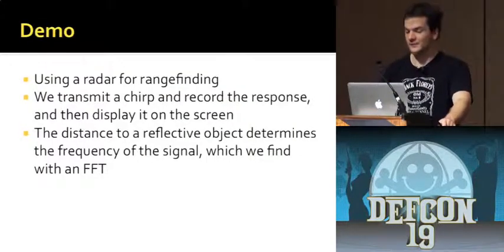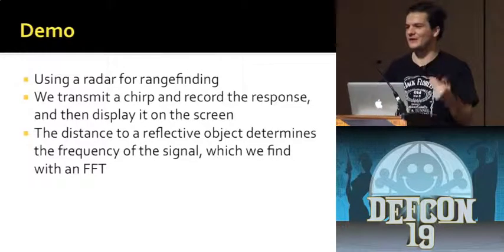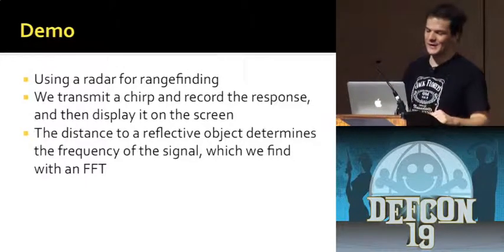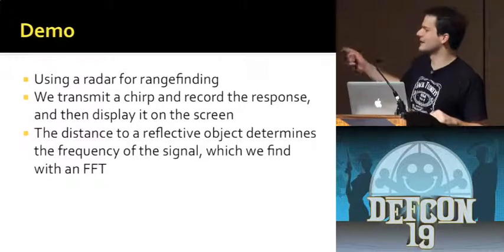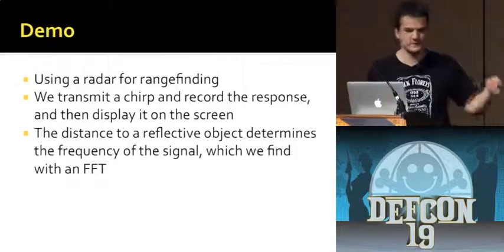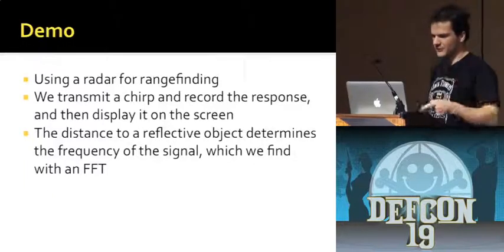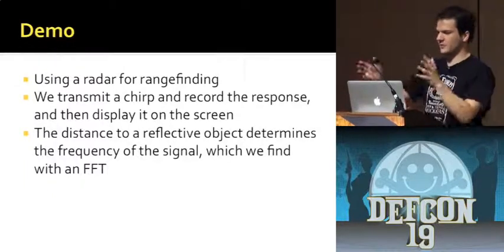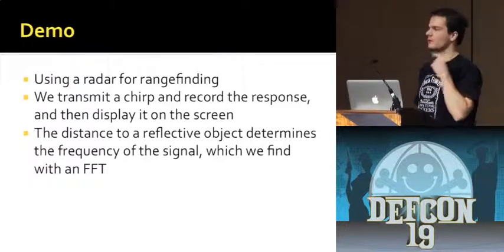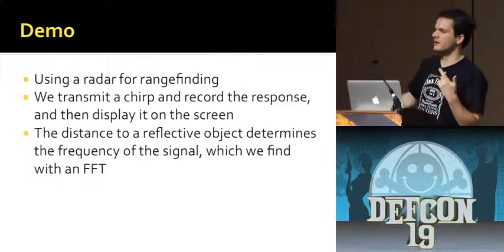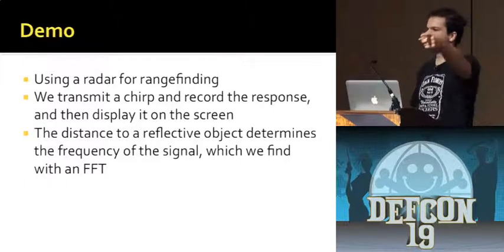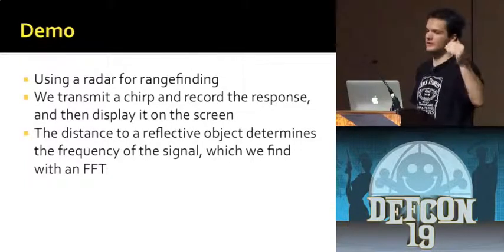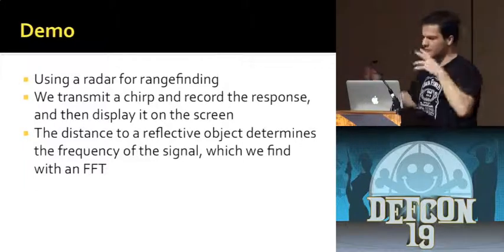I'd like to try a demo now. Basically what we're going to do is a range-finding demo. I'm going to take this thing, set it up to generate a chirp, record the response, and display it on the screen. What you should be able to see is the distance to a wall showing up as a stronger signal at some range, plotted with respect to range. All the processing is done with an FFT.